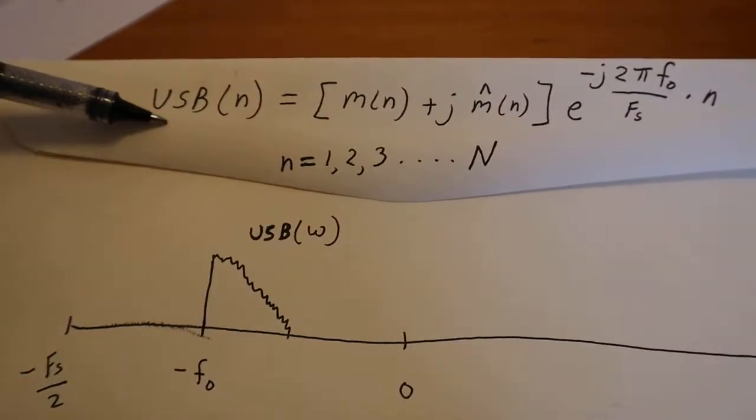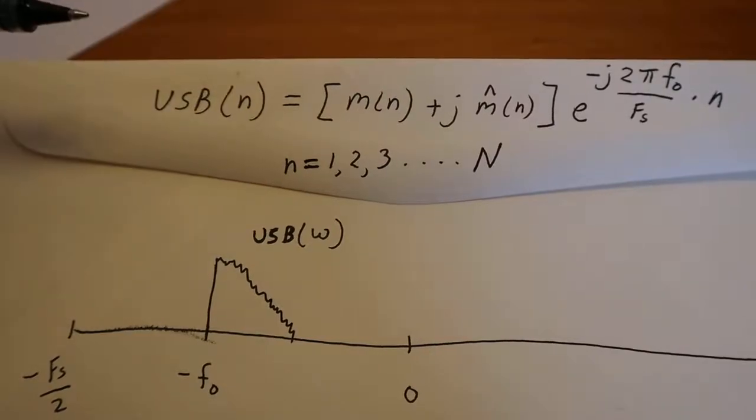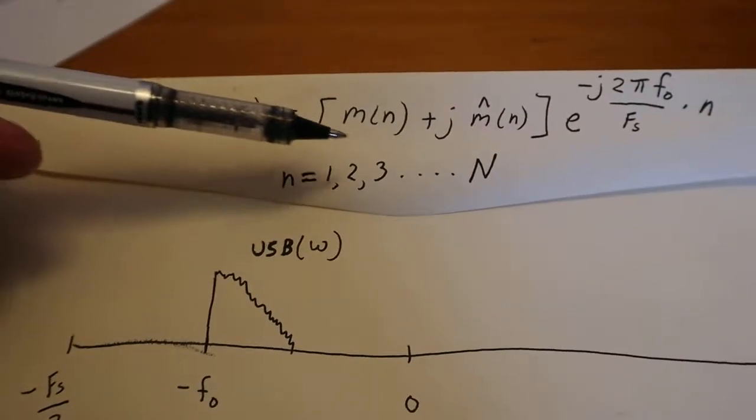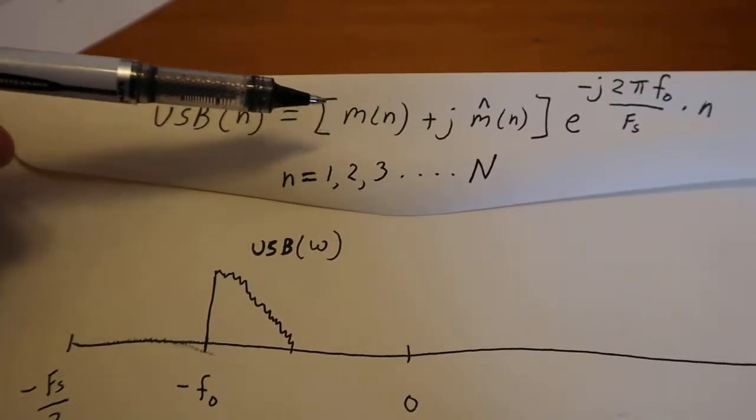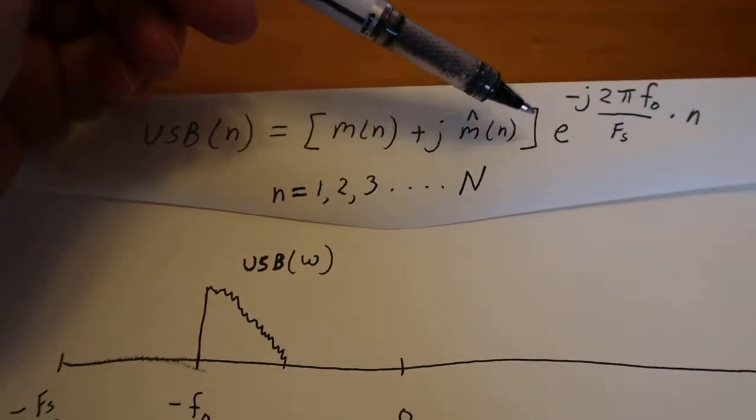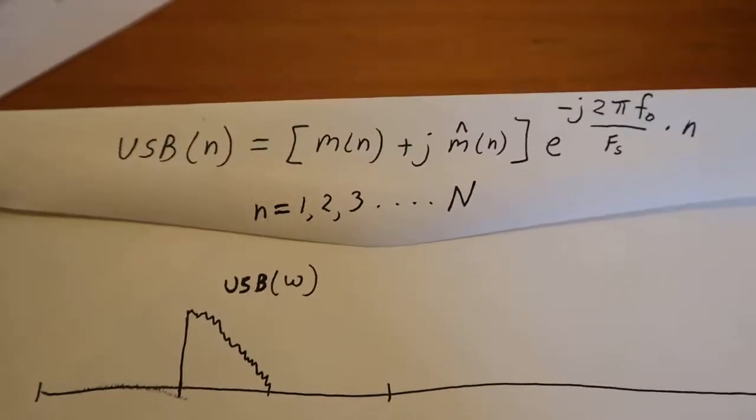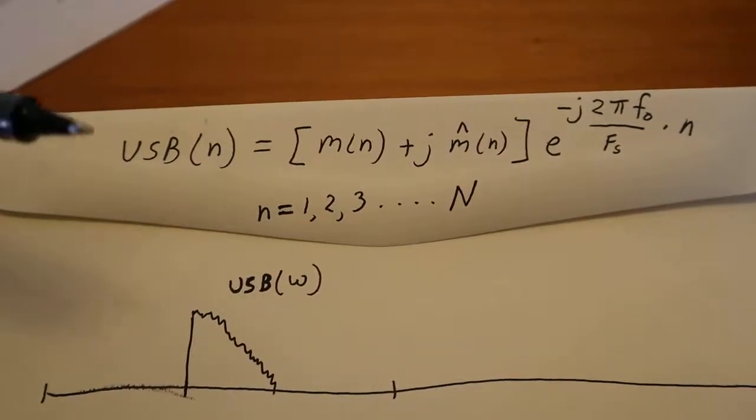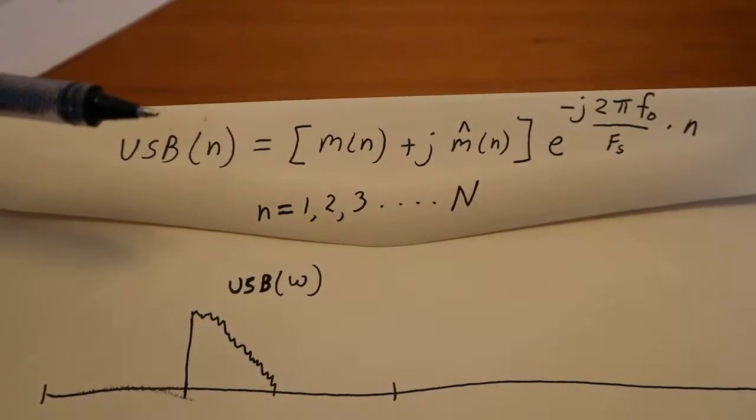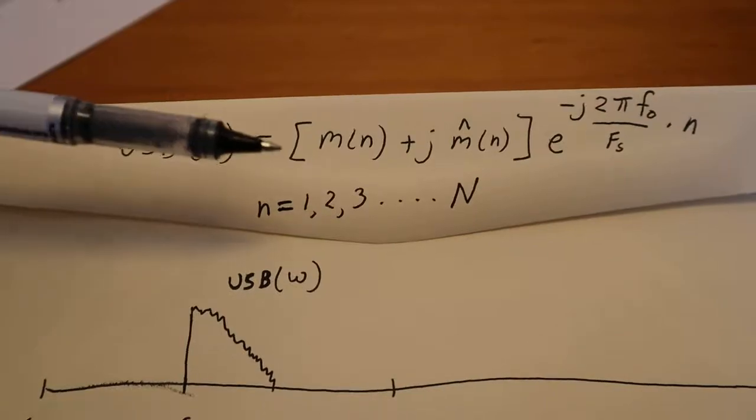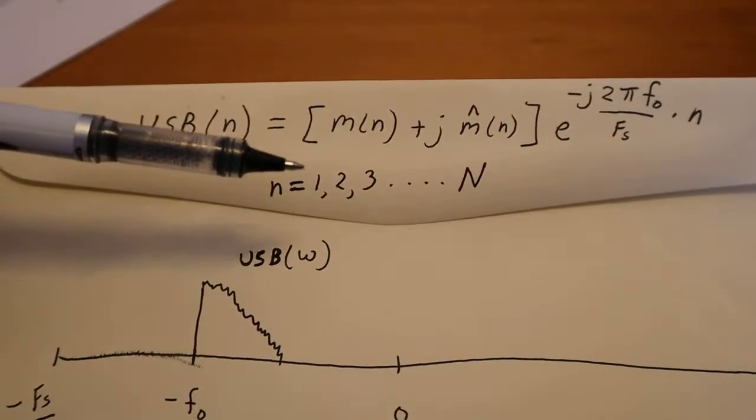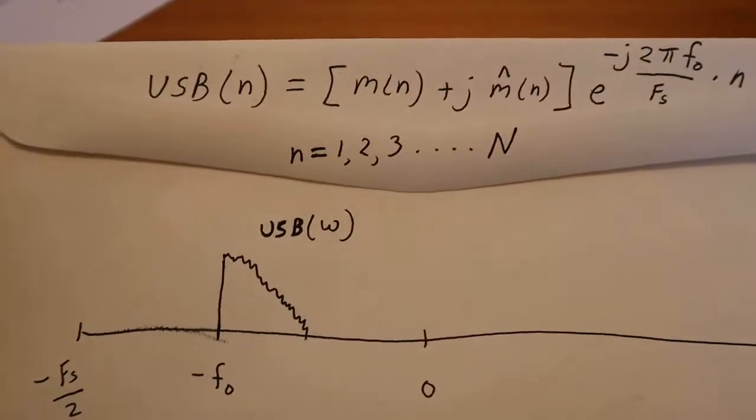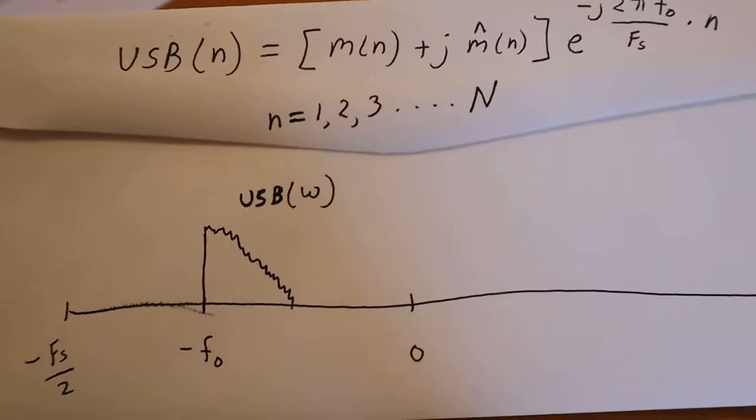Basically, we replace time with little n. So here's our Hilbert transform in the discrete time multiplied by our phasor, which has also now been converted to discrete time. So negative j 2 pi f zero divided by the sample rate times little n, and little n is 1, 2, 3, all the way up to big N, and big N is the number of samples that's going to be in m of n.